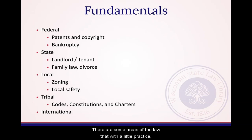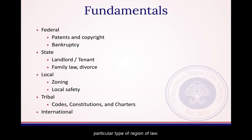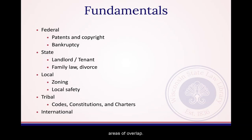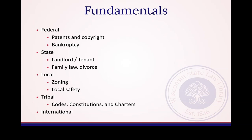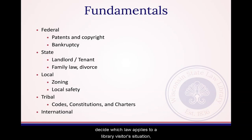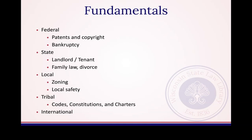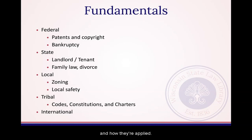There are some areas of the law that, with a little practice, you'll quickly recognize as best researched in a particular type or region of law. However, it's important to understand that there can be areas of overlap. For example, employment discrimination laws and agencies that handle complaints exist on both the federal and state level. As a librarian, it's not your responsibility to decide which law applies to a library visitor's situation, but you can help them to locate sources of the law, and sometimes books or articles that talk about the different sources of law and how they're applied.